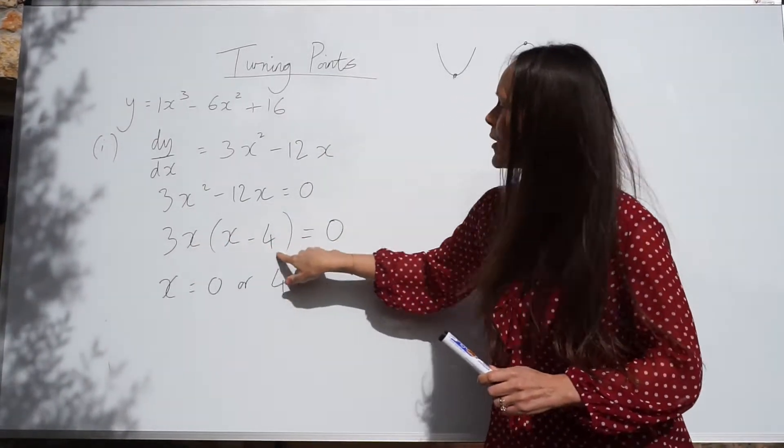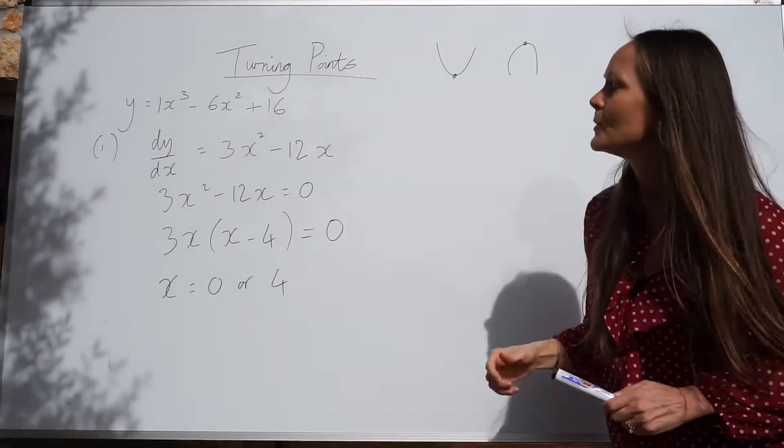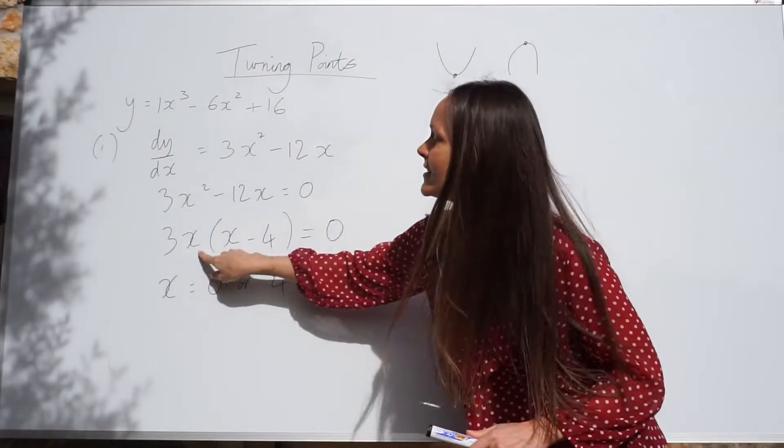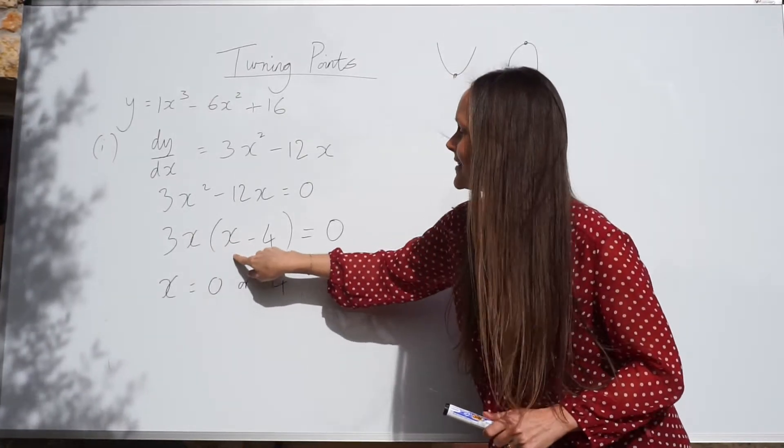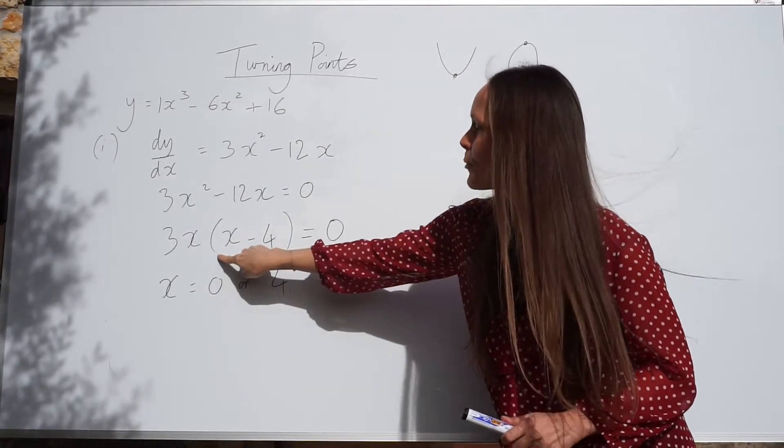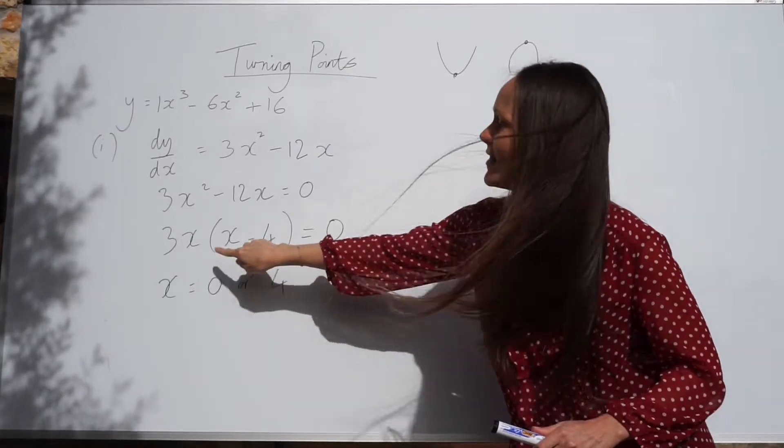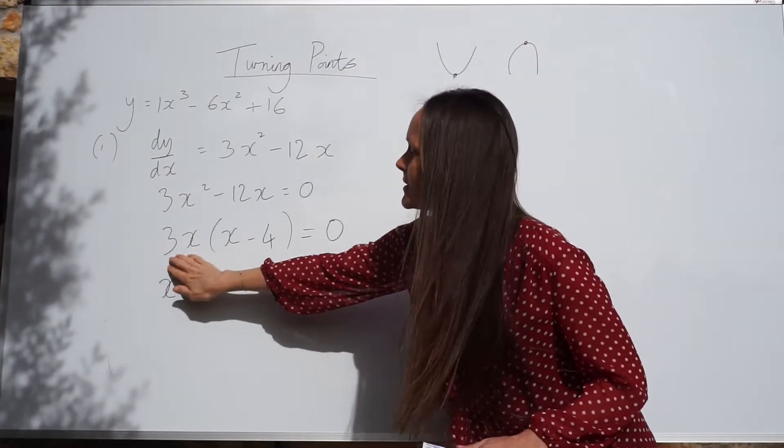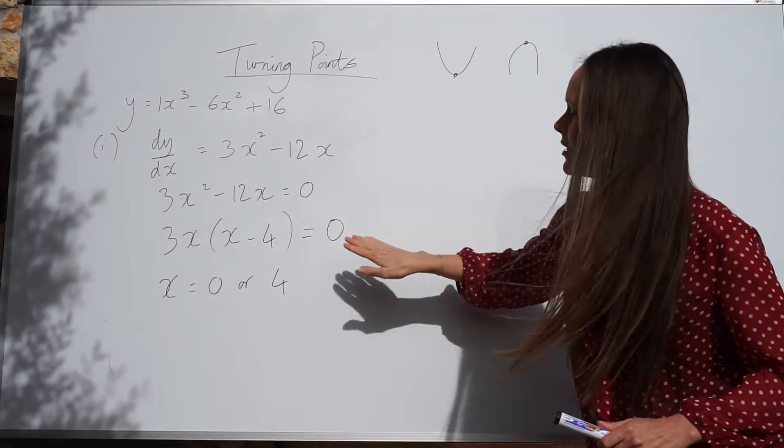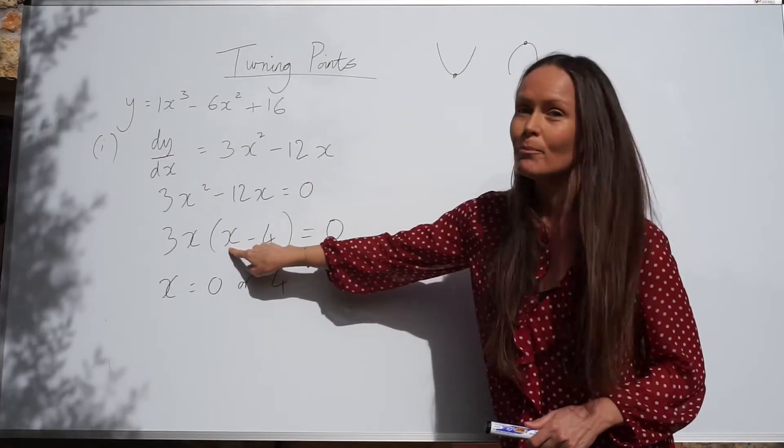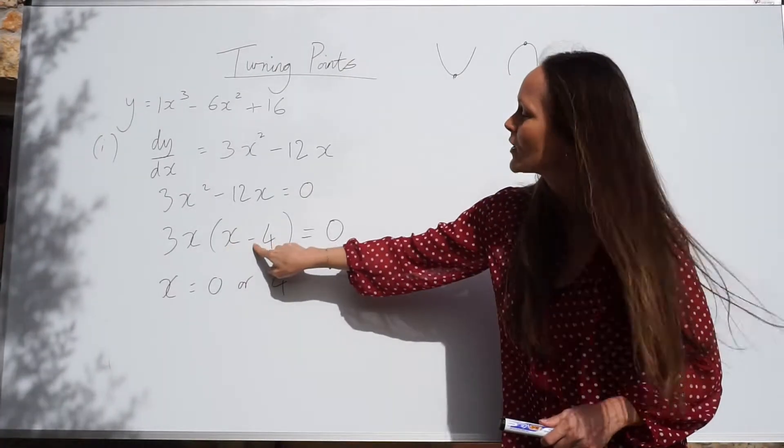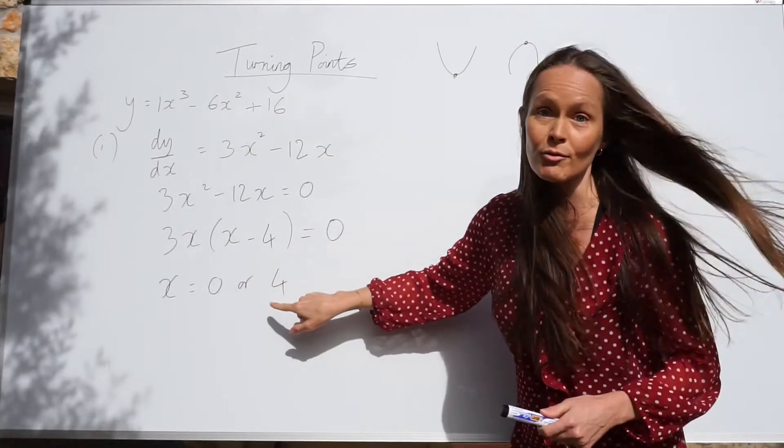Because this expression is equal to 0. Which means either this is equal to 0. So x must be 0. And this is a number. Or the brackets are equal to 0. And this is a number. Because when you times a number by 0, the answer is always 0. And if the brackets equal to 0, x should be positive 4. Because 4 take away 4 is 0.